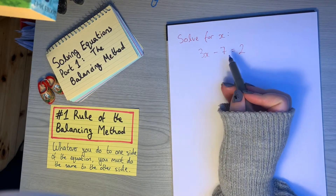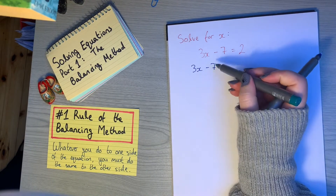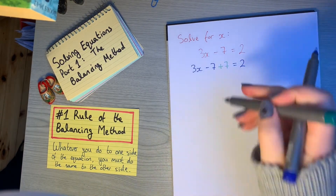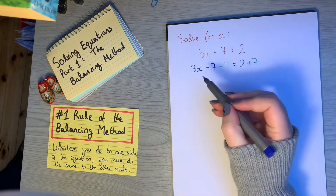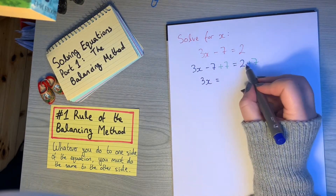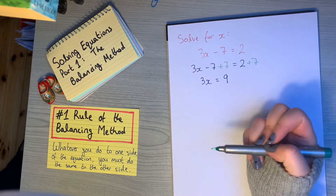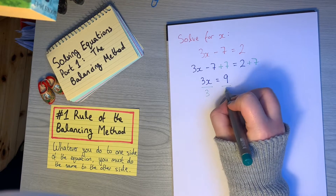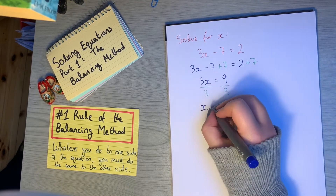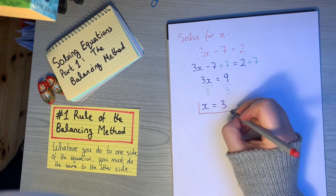Let's have a look at another one. We have 3x minus 7 is equal to 2, and we need to solve for x. I want to get rid of the 7 on this side, so I'll add 7 to both sides. Minus 7 plus 7 leaves me with 0, so on this side I'm left with just 3x. And then 2 plus 7 leaves me with 9. So I have 3x equals 9, but I don't want 3x — I just want 1x. So I'll divide both sides by 3, which gives me x equals 3.